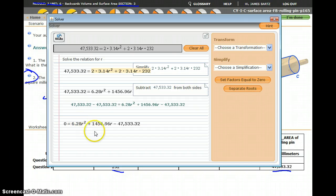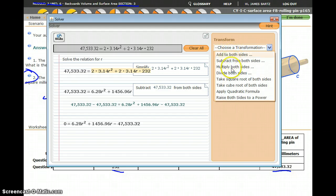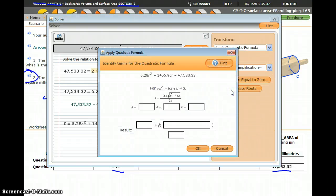Now that that's equal to zero, I can use the quadratic formula, which if I go under the transform menu, I can click apply the quadratic formula.